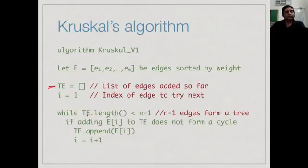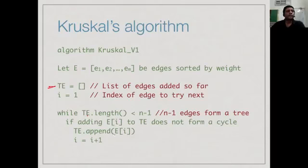So long as the number of edges in the tree is not n minus 1, we have to add more edges. We look at the next edge ei. If ei does not form a cycle when added to the tree, we append it and move to i plus 1. If it does form a cycle, we discard it and go ahead. This is all of Kruskal's algorithm: scan through all edges in ascending order of weight, adding each one only if it does not form a cycle.